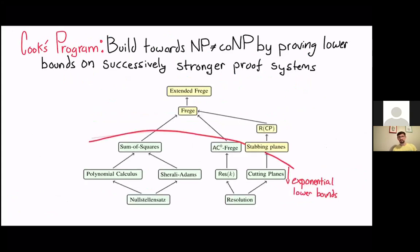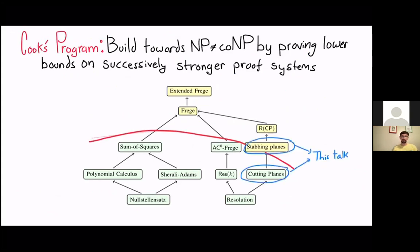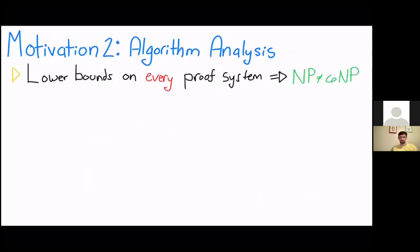This is our current state of the art. Here's a bunch of popular proof systems. The ones above the yellow line, we have yet to prove superpolynomial lower bounds on. The ones below, we have exponential lower bounds. In this talk, we're going to be interested in these two proof systems: stabbing planes and cutting planes.